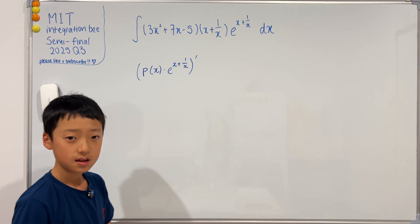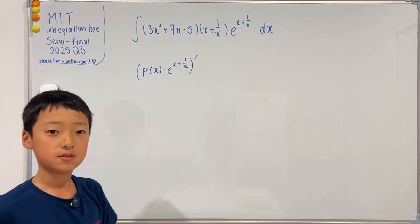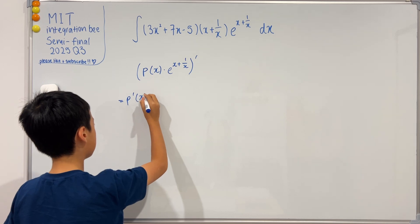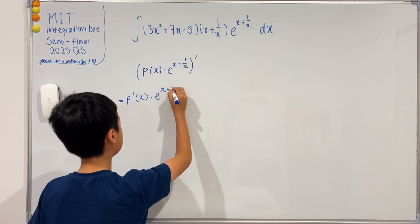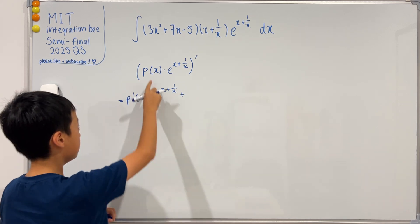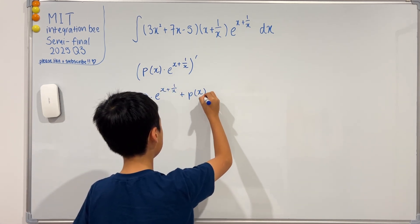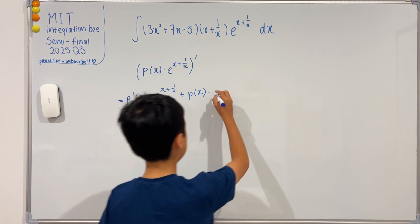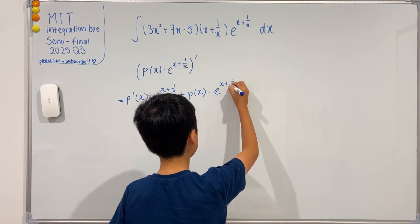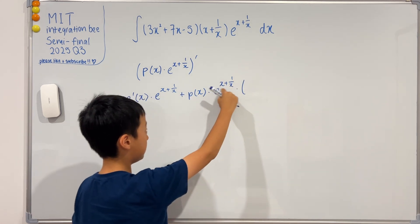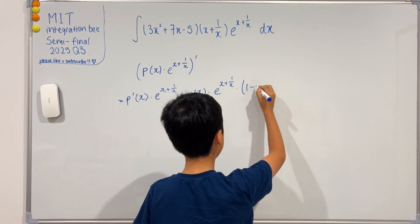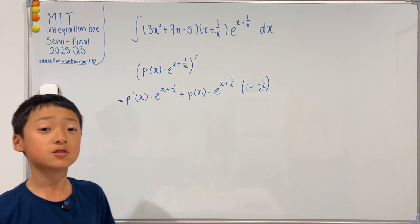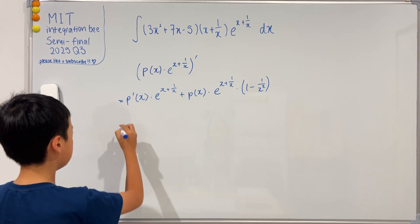So the derivative of this, if we use product rule, is the derivative of the first times the second plus the first times the derivative of the second. The derivative of e to the x plus one over x is you just copy it, and then you multiply by the derivative using the chain rule, which is just one minus one over x squared.